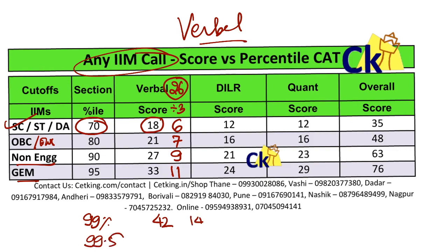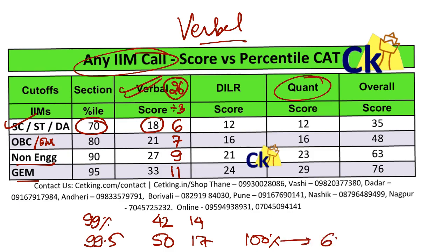99.5 percentile will be around 50 marks, which is approximately 16 to 17 questions correct. If you want to target 100 percentile — say you're very weak in quant and want to maximize your verbal score — then 100 percentile is approximately 60 marks, which is 20 questions correct. These are the magic numbers to remember from the verbal point of view.